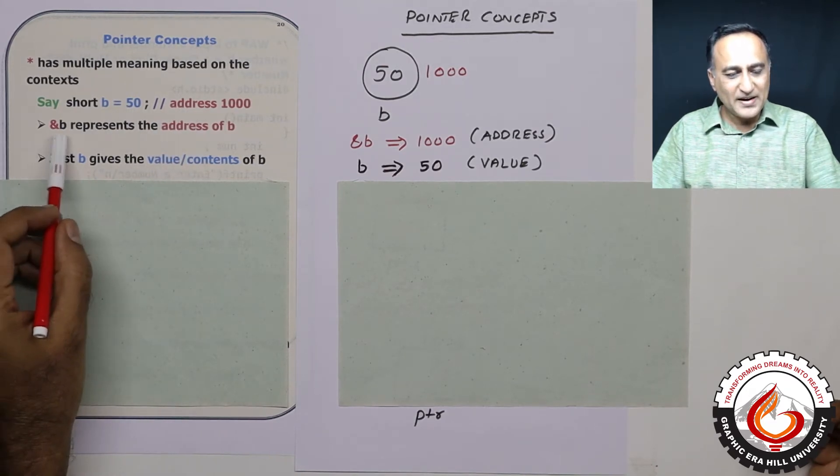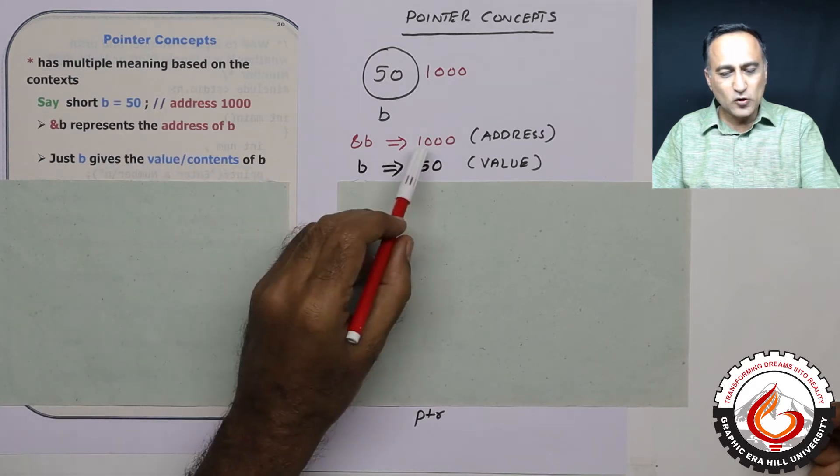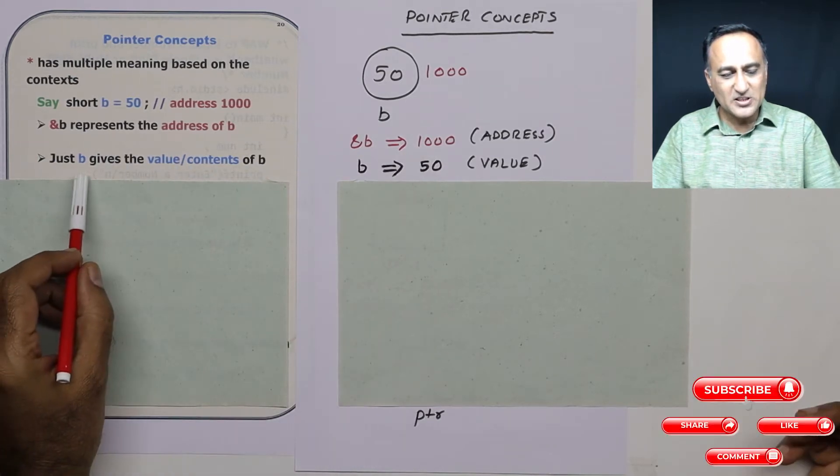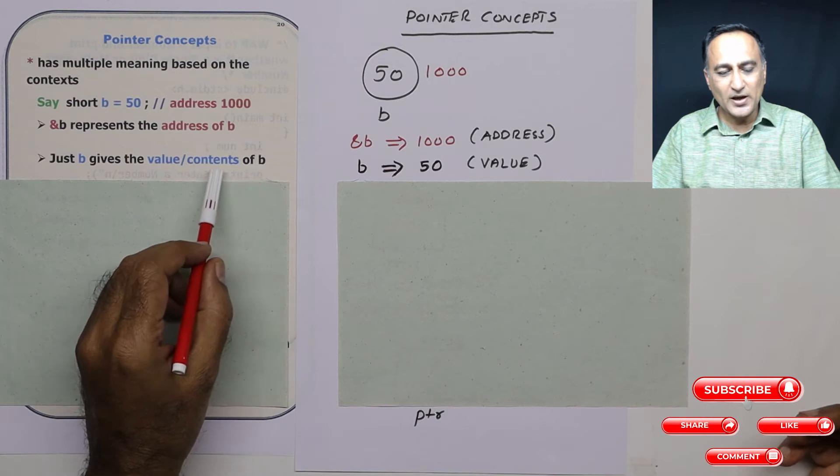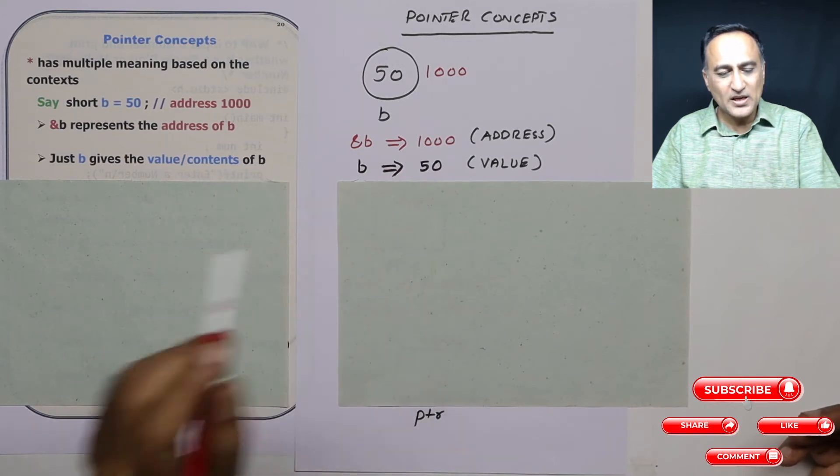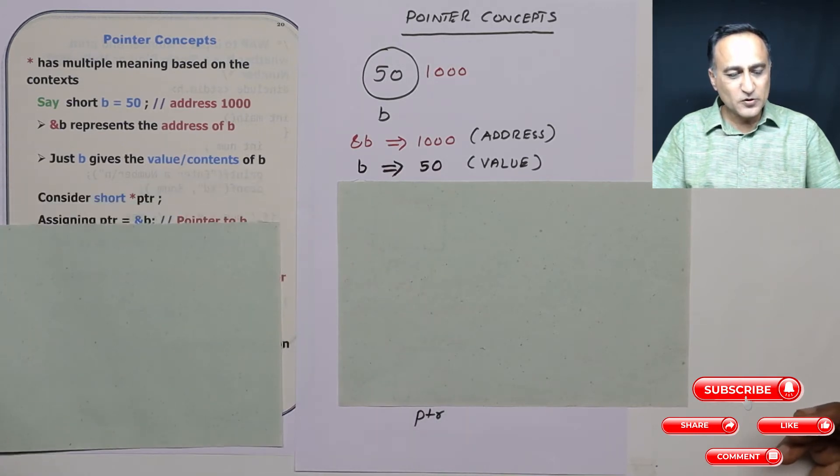So address of b is 1000, the value of b is 50. If I print address of b it is going to print 1000. If I print just b, it gives me the value or contents of b, which happens to be 50.